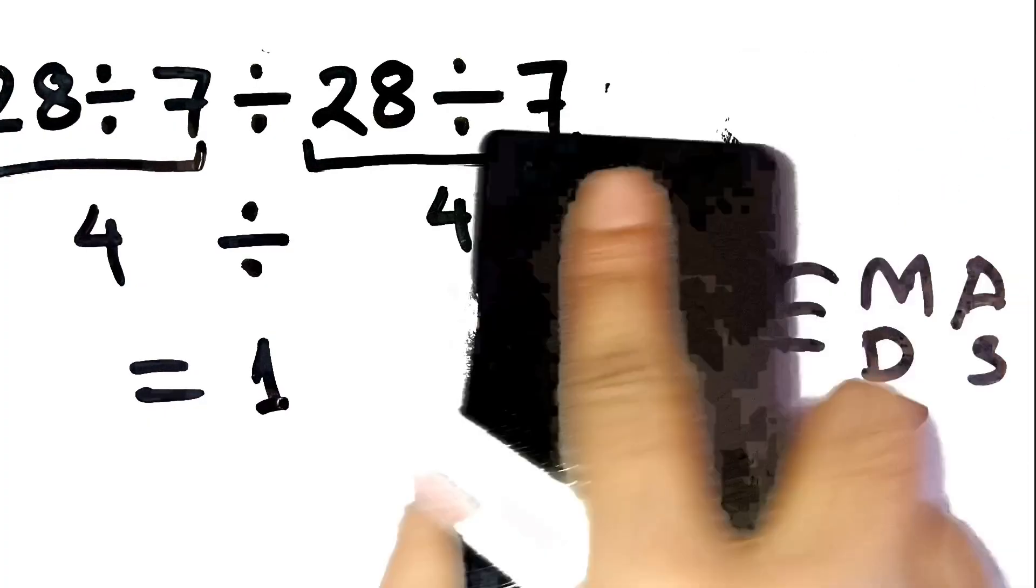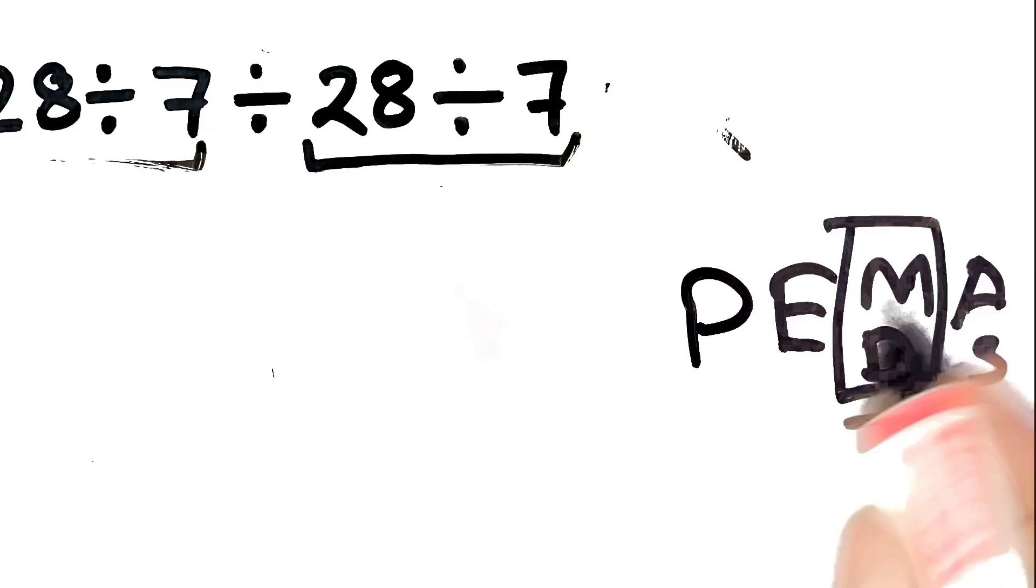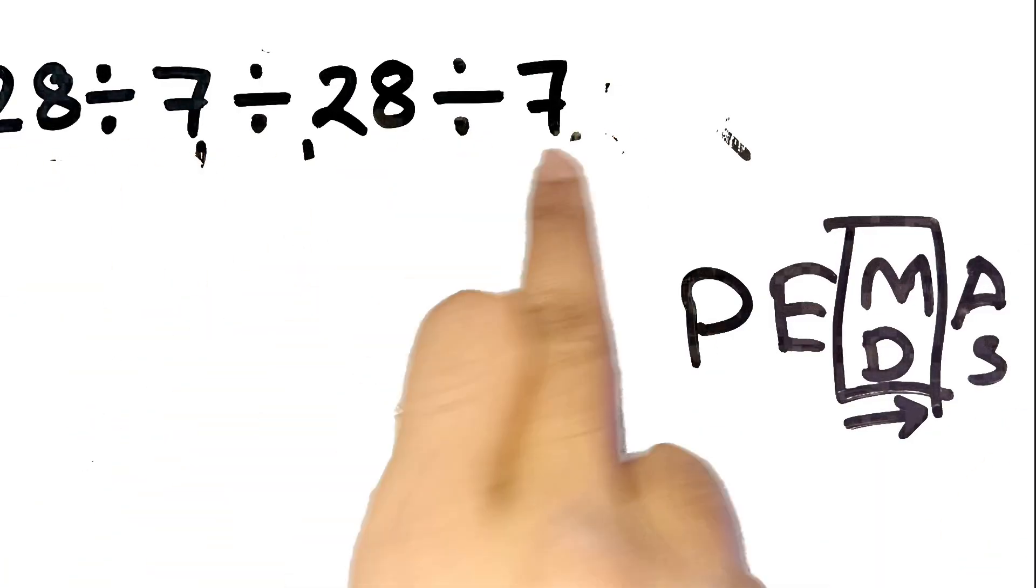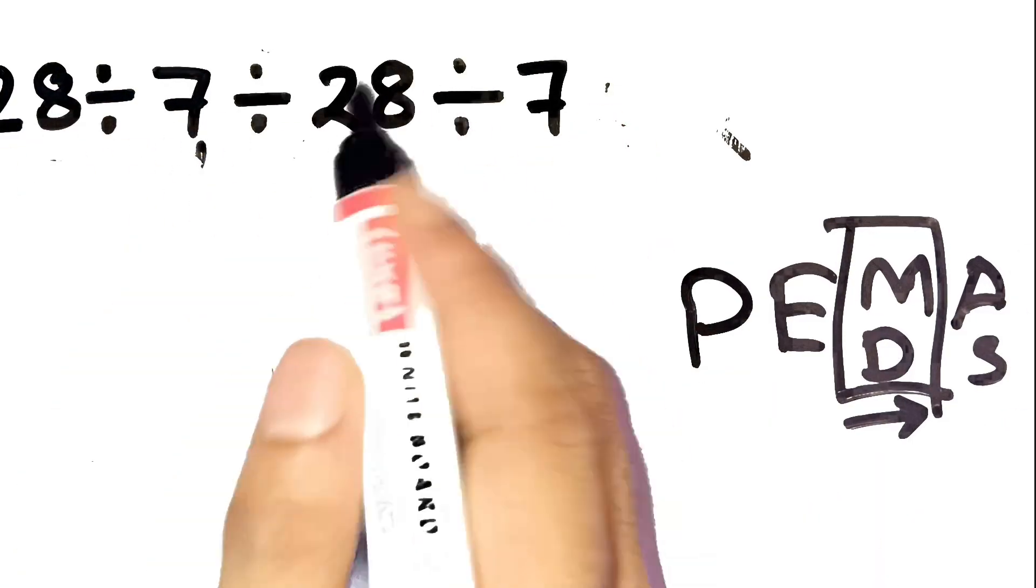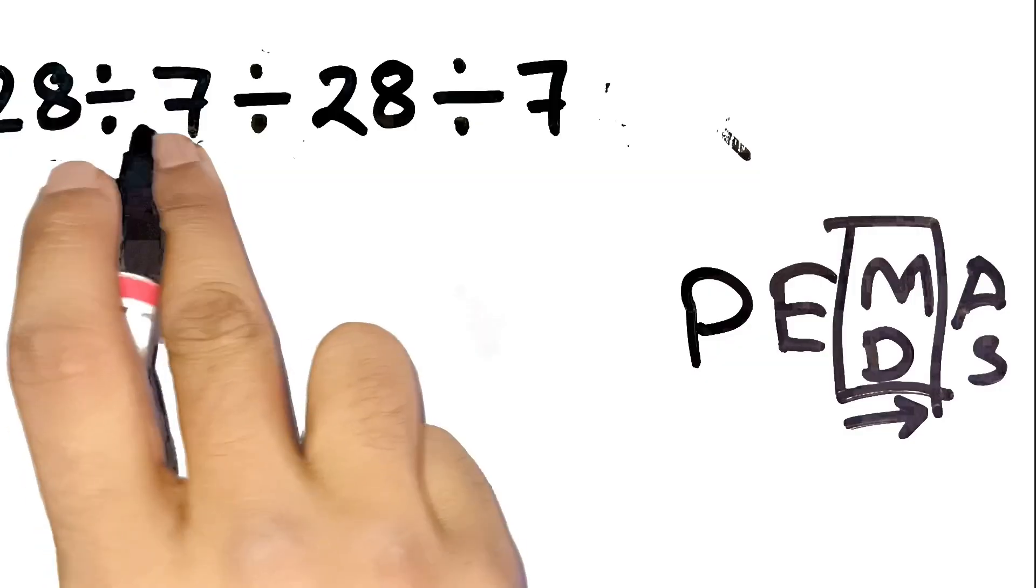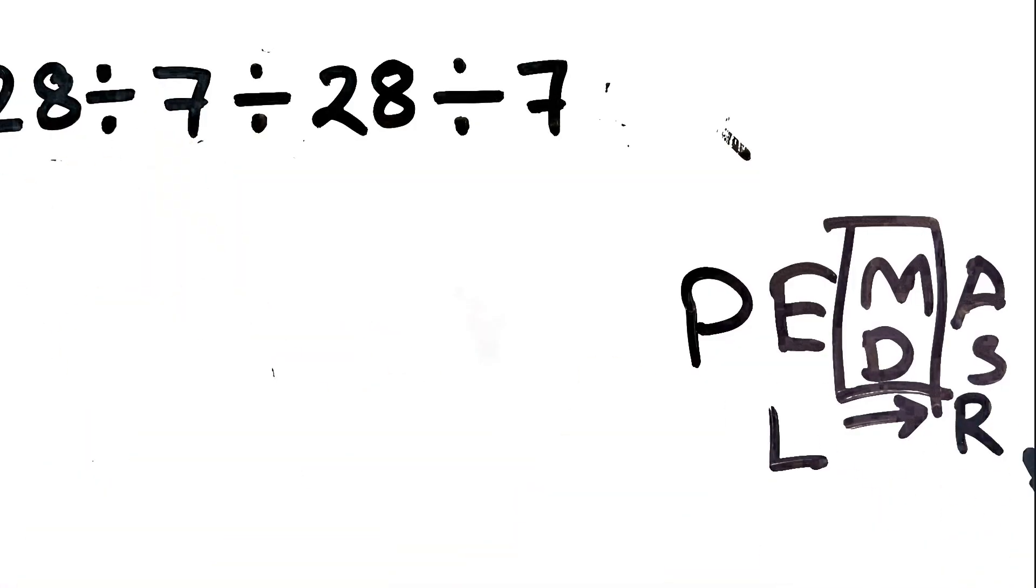A key thing to remember here is that division and multiplication have equal priority. So when we have multiple divisions in a row, we don't pair numbers arbitrarily. We just go left to right.